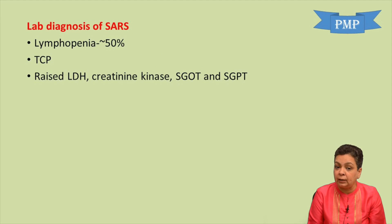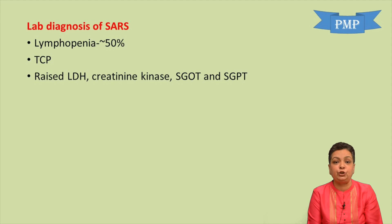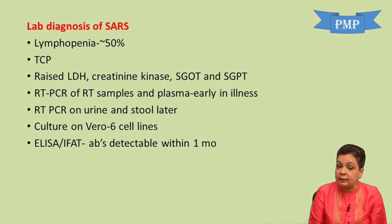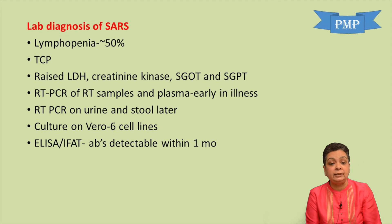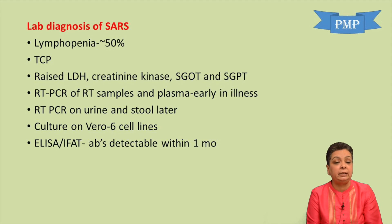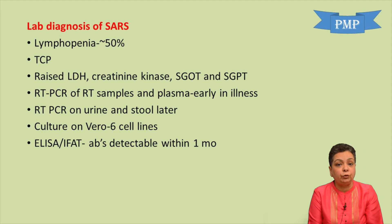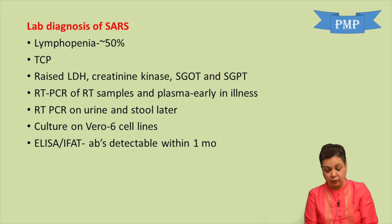For laboratory diagnosis of SARS, lymphopenia is seen in about 50 percent of patients; thrombocytopenia and raised LDH, creatinine kinase, SGOT, and SGPT are also observed. RT-PCR of respiratory tract specimens and plasma is very sensitive early in the disease; RT-PCR of urine and stool can be done later. The virus can be cultured on Vero cell lines. ELISA and indirect fluorescent antibody testing can detect antibodies, which appear after one month.